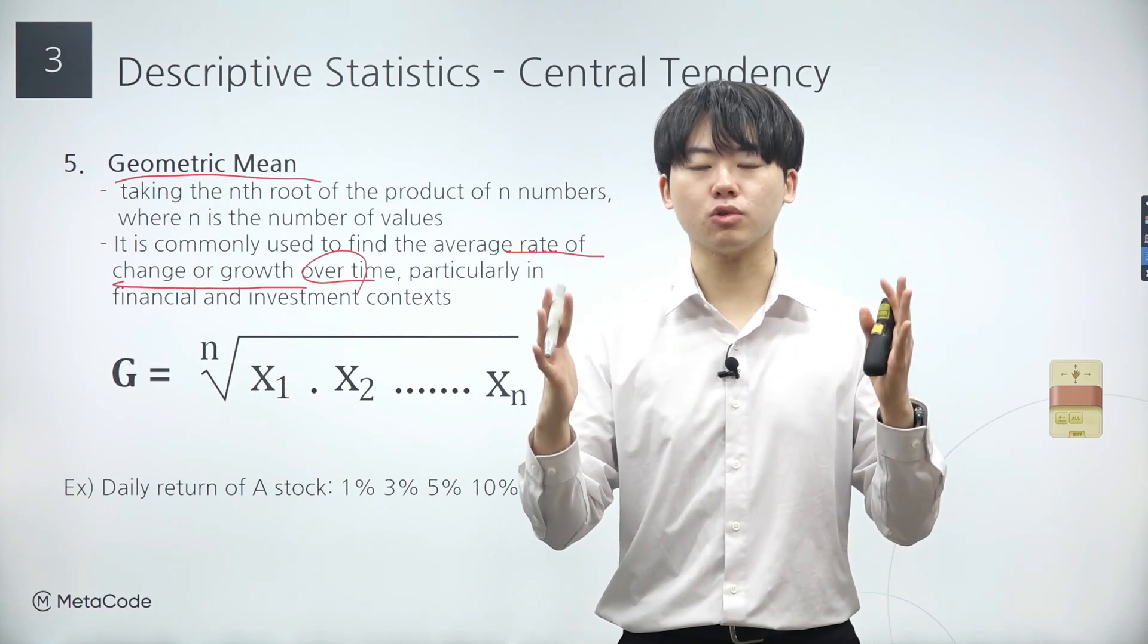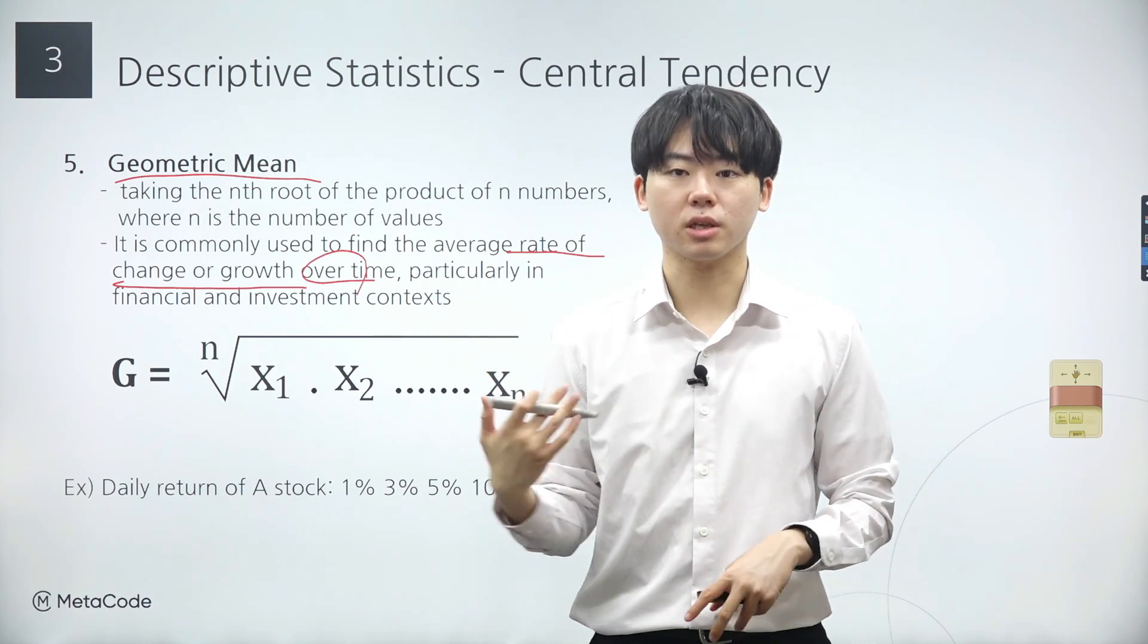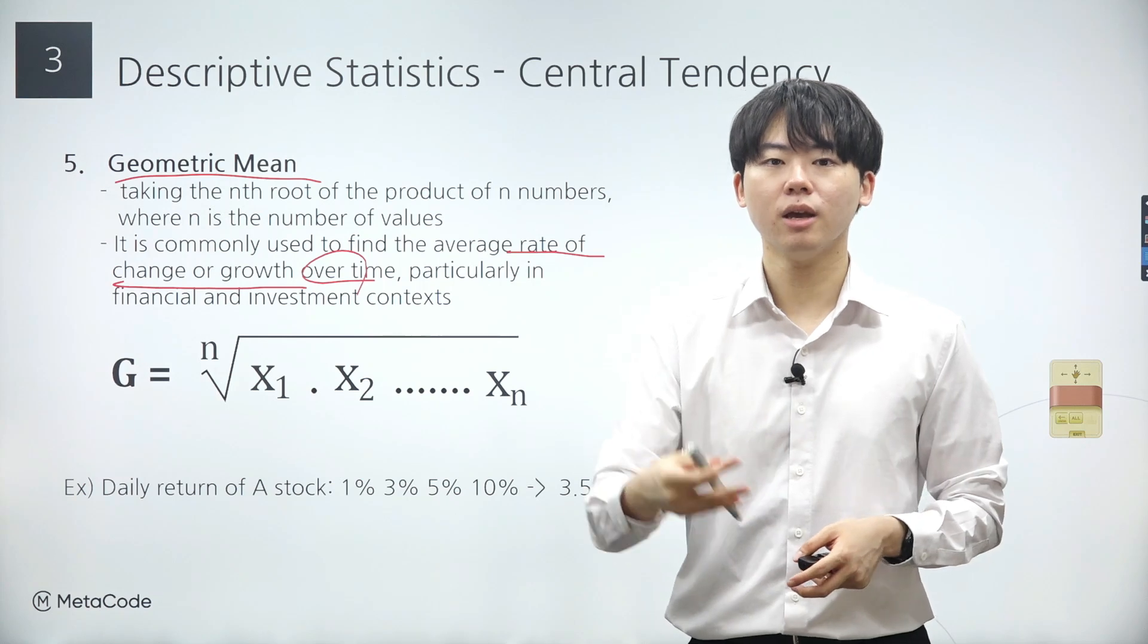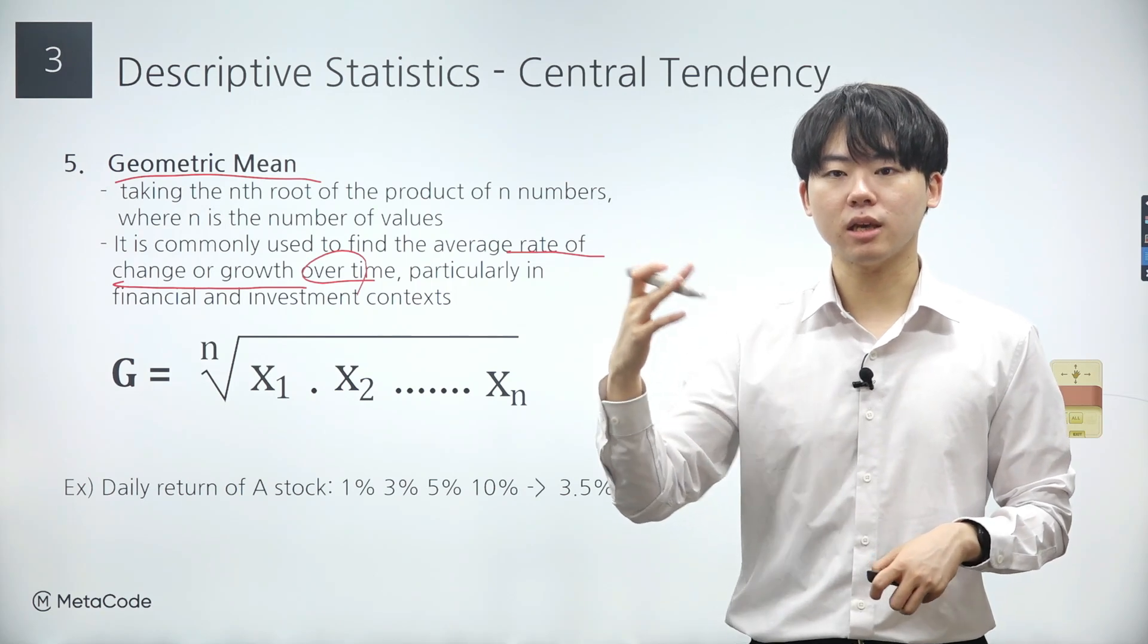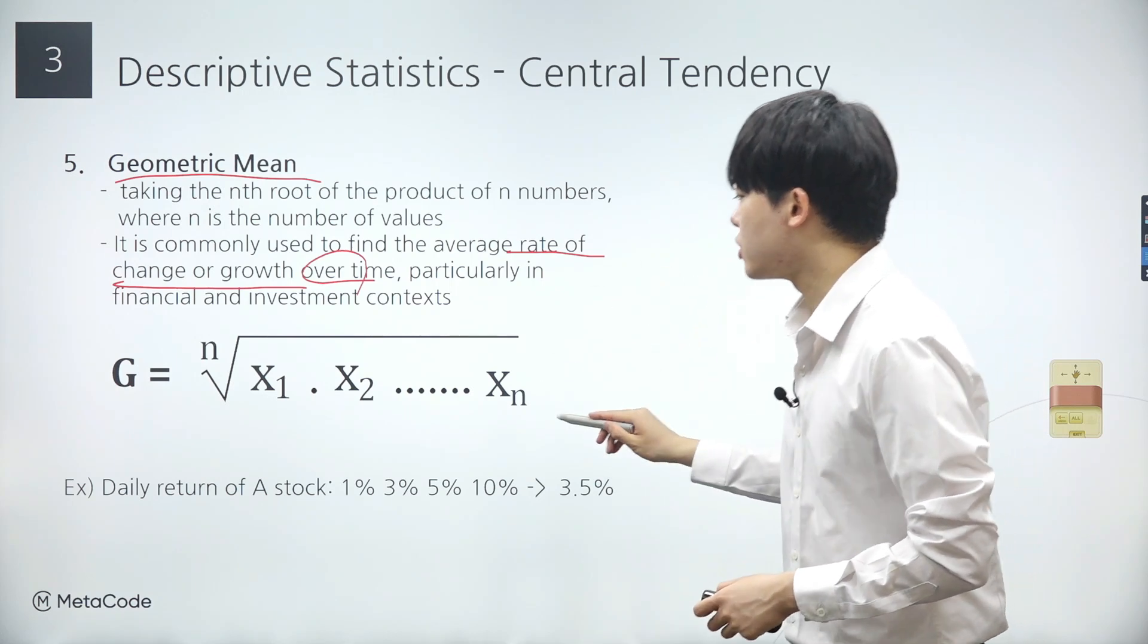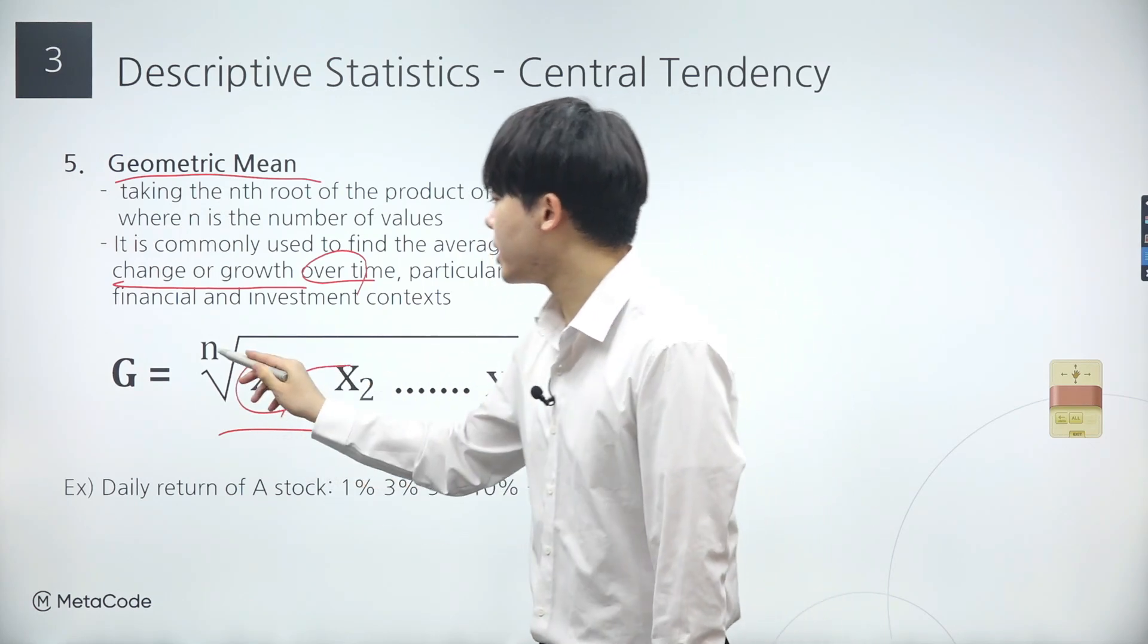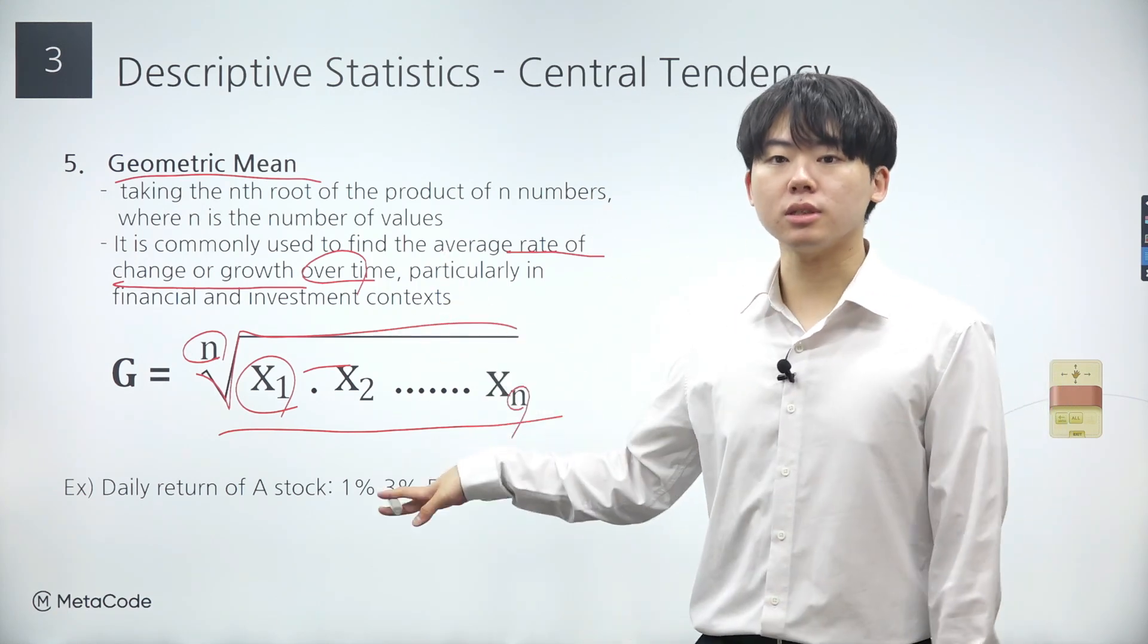The geometric mean is particularly valuable for calculating the average rate of change or growth over time. For instance, it's commonly employed to determine the average profit rate of a specific stock over a period, such as 5 days with returns of 1%, 3%, 5%, and even 10%. You might initially consider using the arithmetic mean for calculating average investment returns, but the geometric mean is preferred when dealing with rates of change over time. Once again, the geometric mean is useful for data sets with values that multiply together, such as growth rates, ratios, or rates of return. To calculate the geometric mean, we begin by multiplying all the values in our data set, then take the nth root of the product, where n is the number of data points we have.